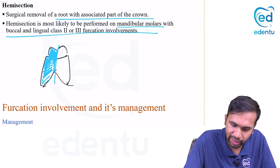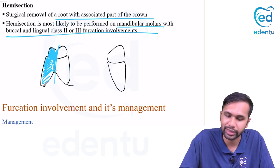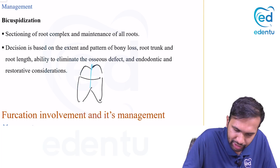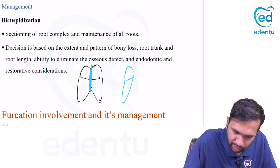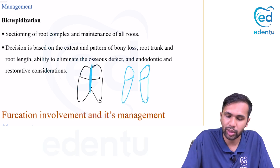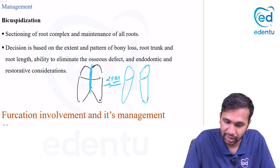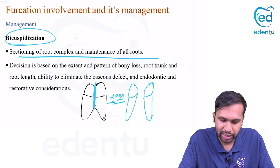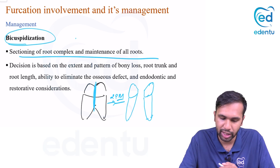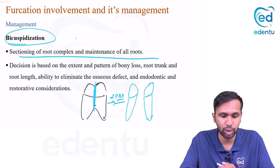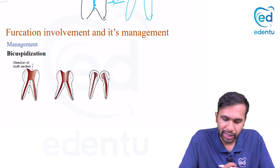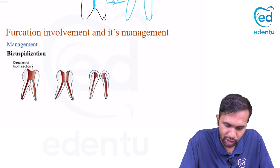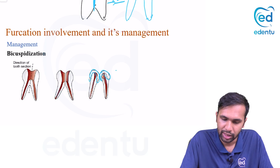Bicuspidization is similar to hemisection, but here you make a cut and preserve both fragments separately — effectively converting a molar into two premolars. Since premolars are bicuspids, this procedure is called bicuspidization. It involves sectioning of the root complex while maintaining all roots. The decision is based on extent and pattern of bone loss, root trunk length, ability to eliminate the bone defect, and endodontic and restorative considerations including the ability to place a crown.